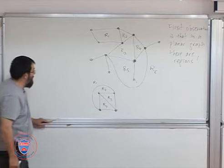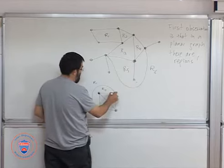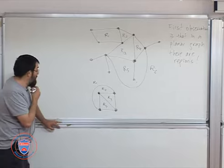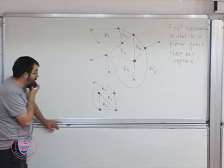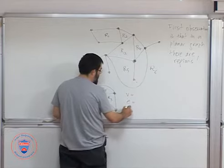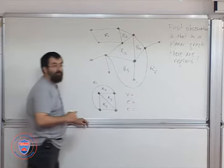What else we have? We have vertices, like as usual. And we have edges. What Euler did was try to understand the relation between number of vertices, number of edges, and number of regions.